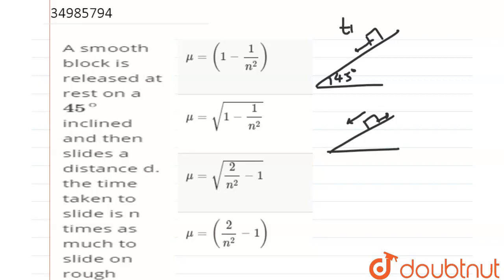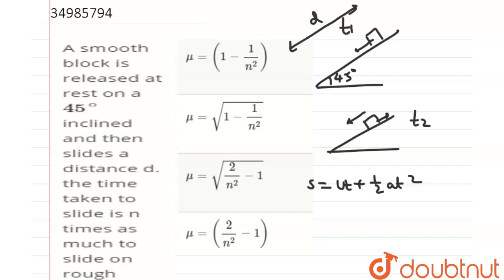Time for the first case is t1. When friction is not present, using S = ut + ½at², the distance traveled is the same — distance d — in both cases.